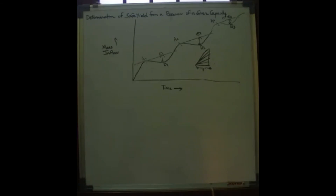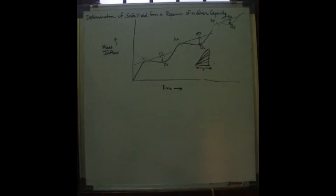The slope of each tangent indicates the yield which can be attained in each year. The flat slope indicates the firm yield, or safe yield. This is how you determine safe yield from a reservoir of given capacity.